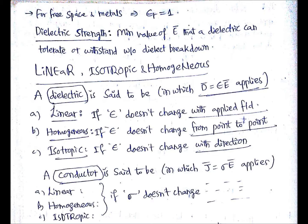A dielectric is said to be linear, homogeneous, and isotropic when permittivity has these conditions with applied field. Then when can we say a conductor is linear, homogeneous, and isotropic? Now for conductor...